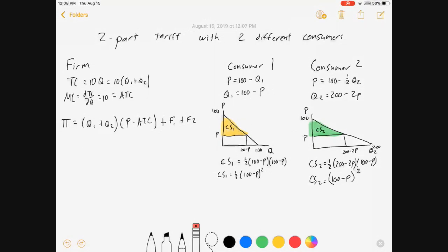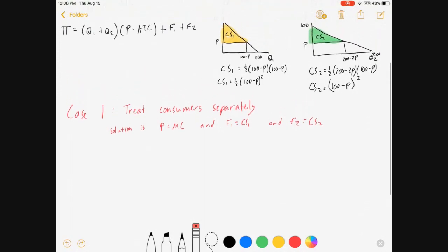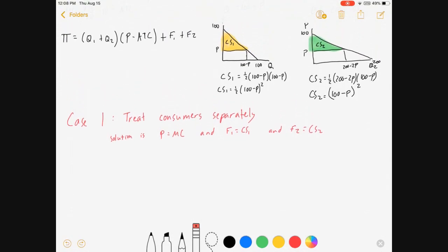Let's look at what we can figure out about two-part tariffs. Case 1: we could treat our customers entirely separately, meaning we charge them different fees to enter the market. In this case, we set the price equal to marginal cost and then charge them both their total consumer surplus. F1 is CS1, F2 is CS2. Price is marginal cost, that's 10, which means Q1 is 100 - 10 = 90.